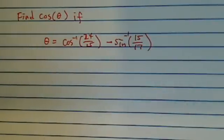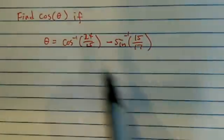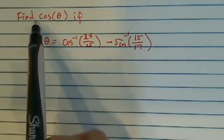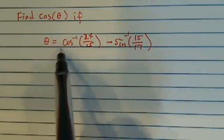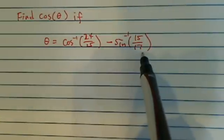Hi, this is Dr. Pan, host of Tucson MassDoc channel on YouTube. Today we have a very interesting trick problem here. We're supposed to find cosine theta if we're given this ugly expression of theta.